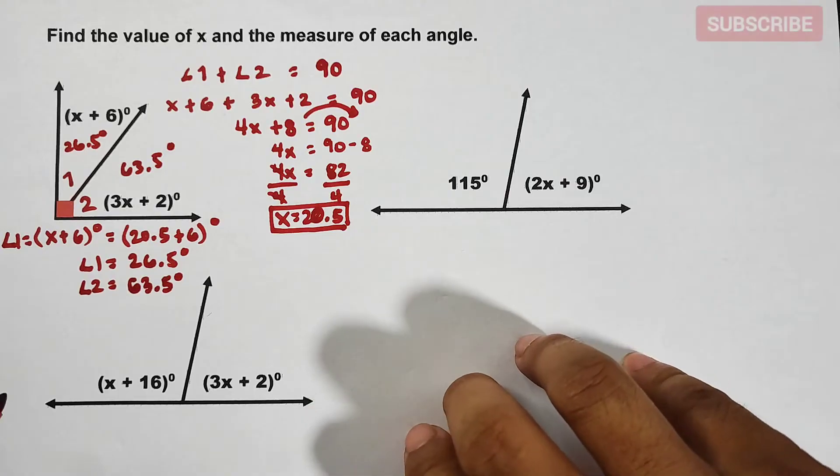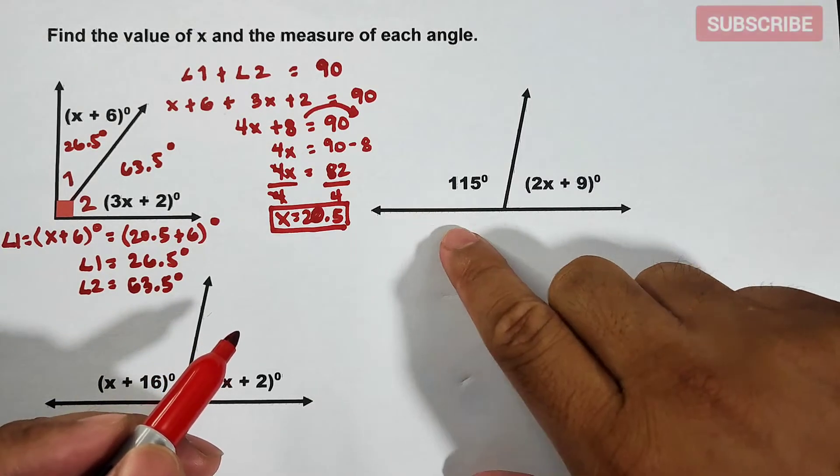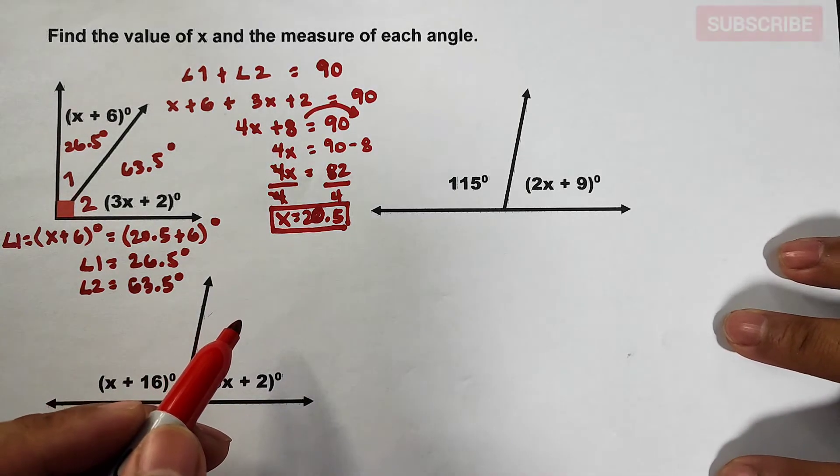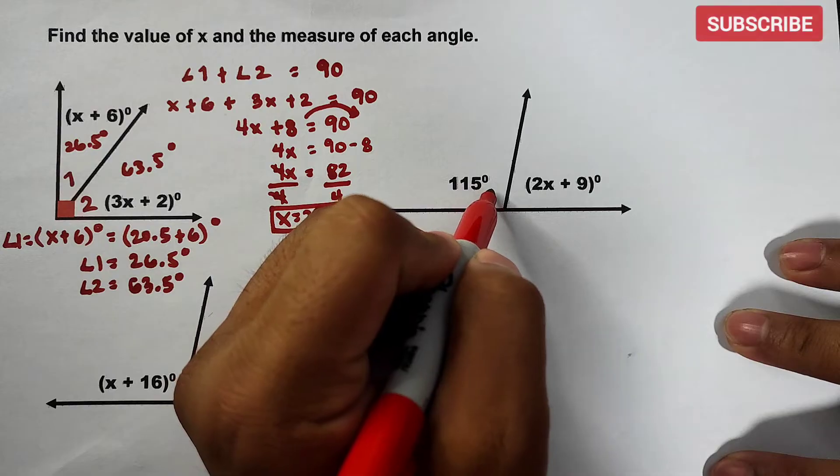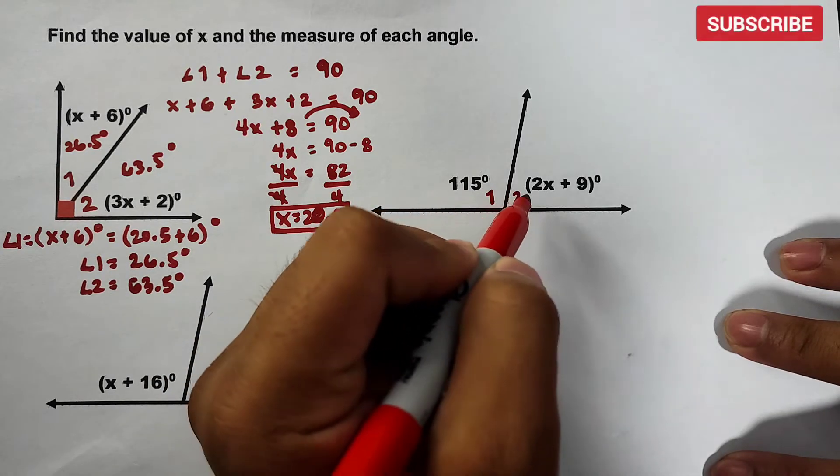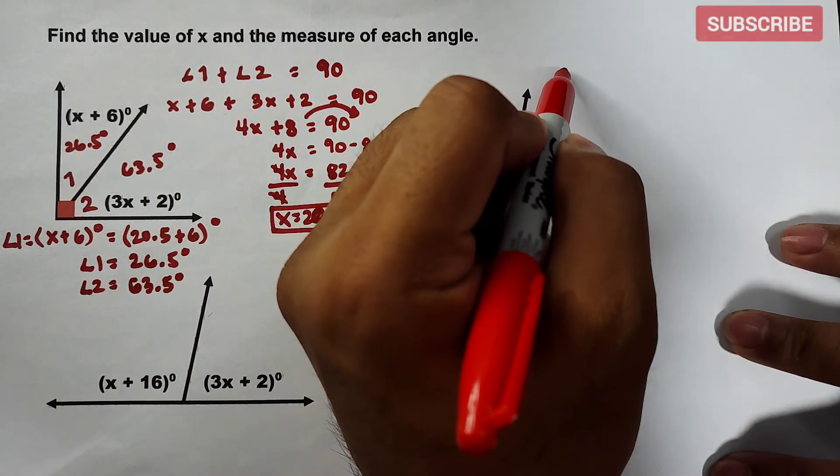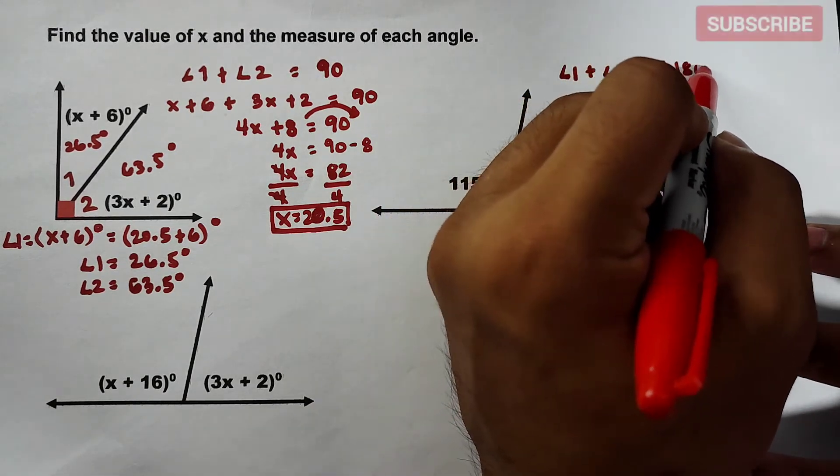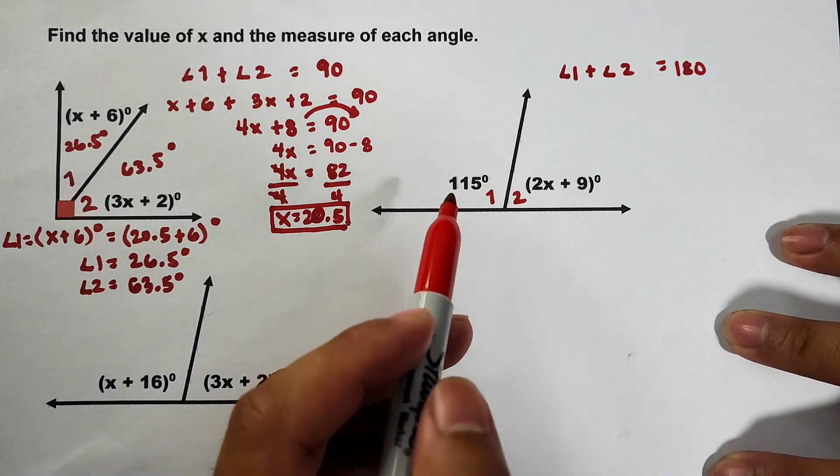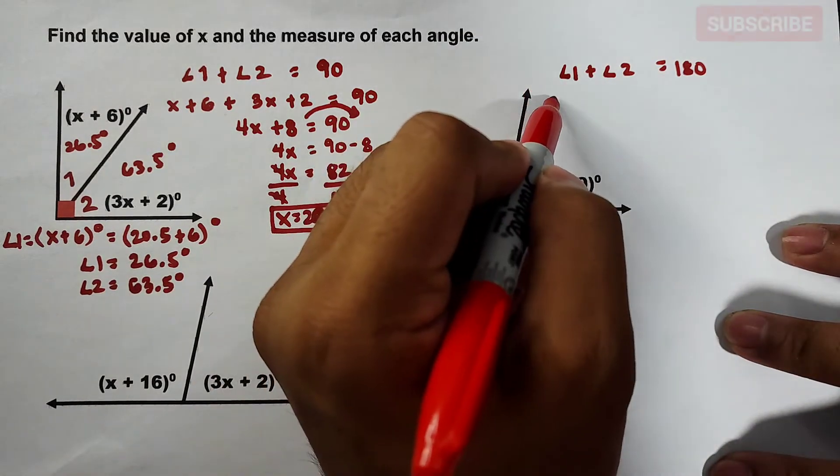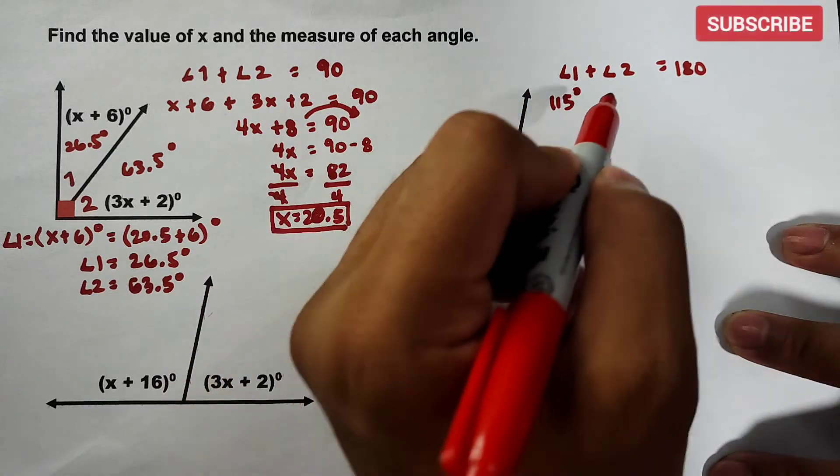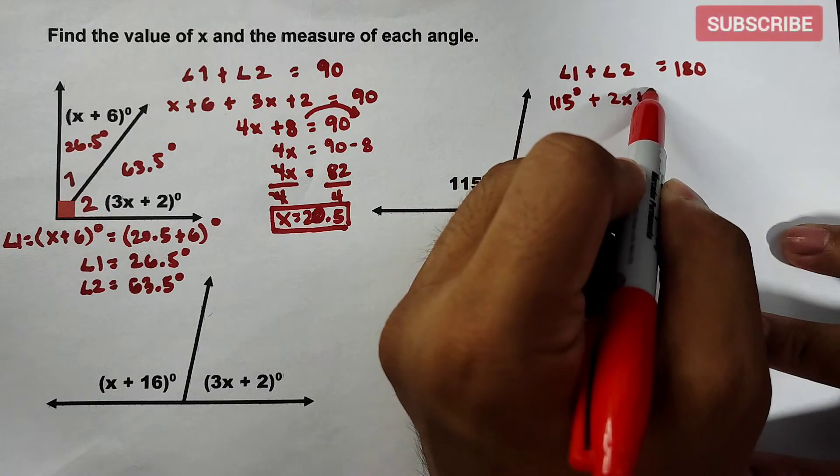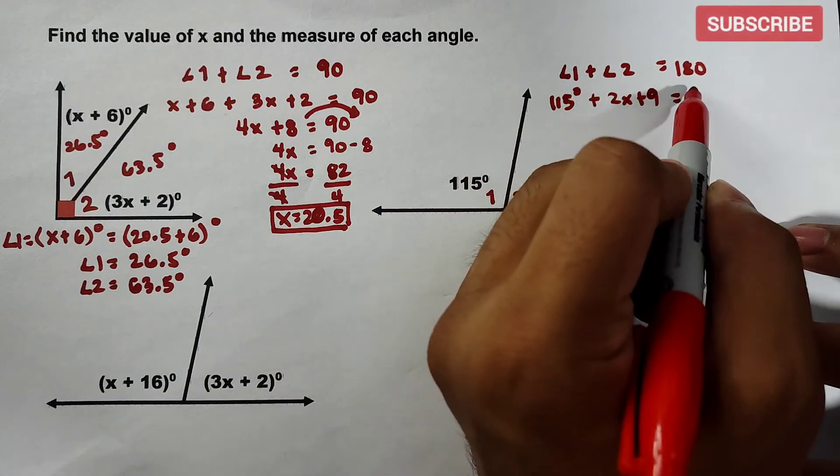For our item number 2, as you can see, this one is a straight angle. So basically, we will use the concept of supplementary angles. Let's say, for example, this is angle 1 and this is angle 2. Your angle 1 plus angle 2 is equal to 180 because they are forming supplementary angles. Your angle 1 is 115 degrees plus your angle 2 is 2x plus 9 is equal to 180.